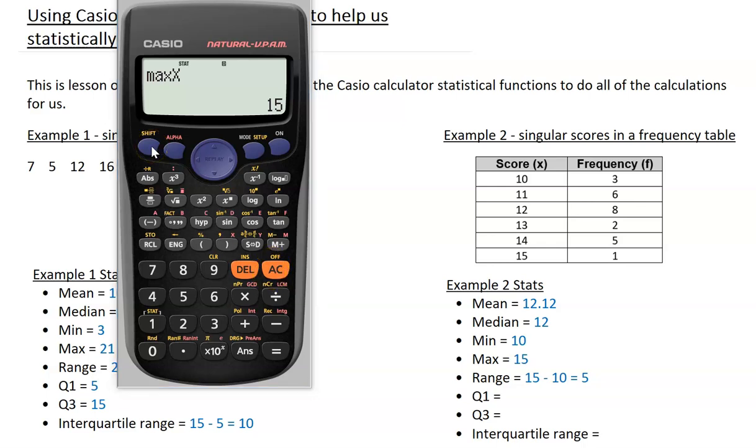Moving on to my Q1 and Q3. Again, the min max, Q1 option 3 is 11. Q3 is 13.5.